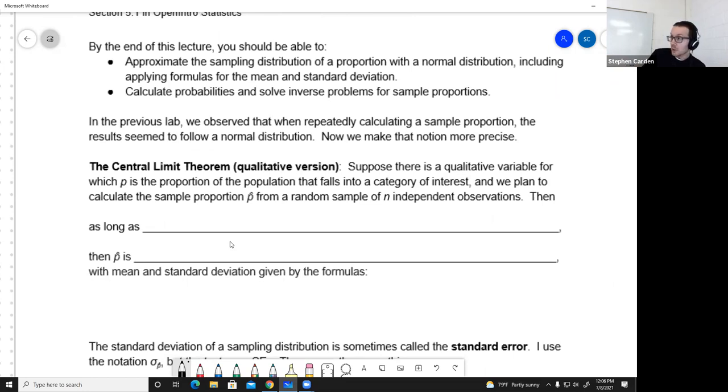Suppose there's a qualitative variable, something categorical, for which p is the proportion of the population that falls into whatever category you're interested in. And we plan to calculate the sample proportion, p-hat, from a random sample of n independent observations. Then as long as n times p is greater than 10, and n times 1 minus p is greater than 10, then the sample proportion, p-hat, is approximately normal.